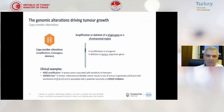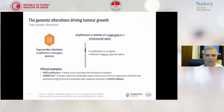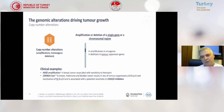Sometimes we see copy number alterations. If there is a copy number alteration, for example in breast cancer called HER2 amplification, we can test this with different methods, also with next-generation sequencing methods. So we can give Herceptin to breast cancer. This is literally called tailored medicine or precision medicine.